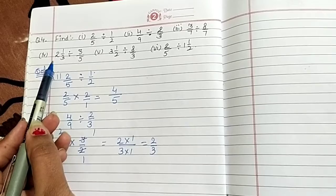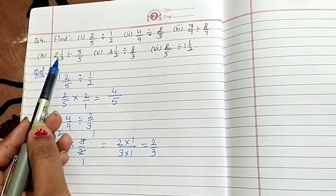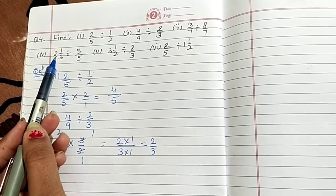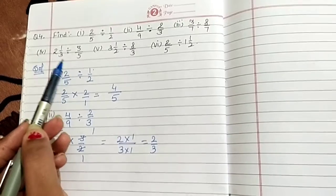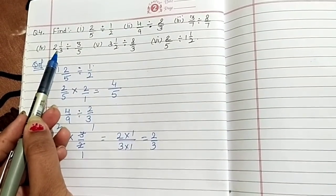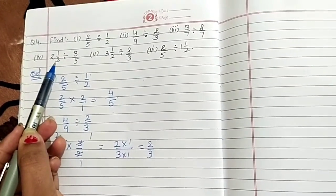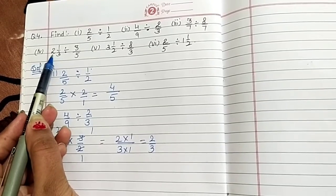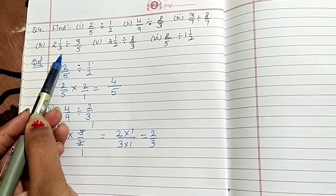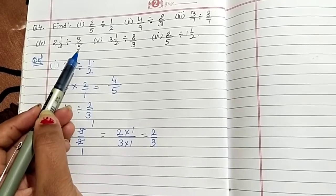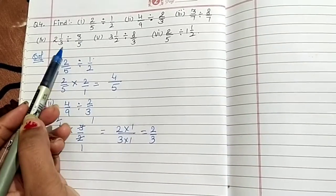Next is fourth part. Here mix fraction given. Firstly you convert into normal fraction, mix fraction to normal fraction. It becomes 3 twos are 6, 6 plus 1 is 7 by 3 divided by 3 by 5. Then same question arises.